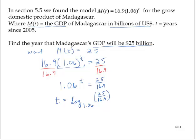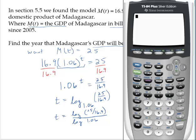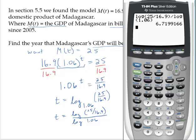Converting that using the change of base rule: t is equal to the log of 25 over 16.9 divided by the log of 1.06. Now I'll use the calculator to approximate that value — log of 25 divided by 16.9, close off the logarithm, divide by log of 1.06, close off the logarithm, and that's approximately 6.72.